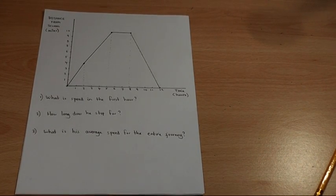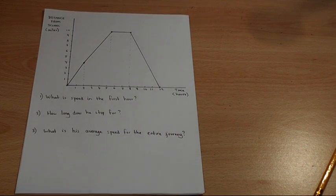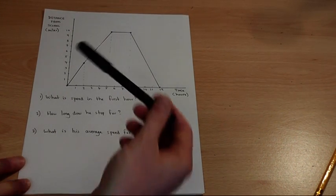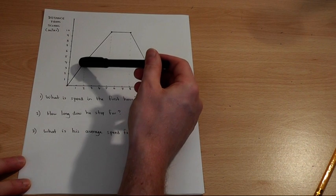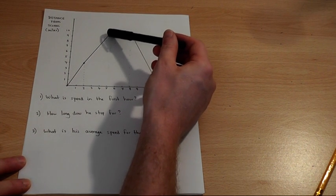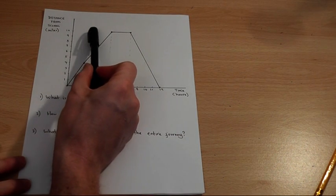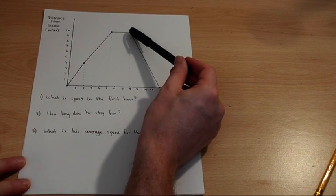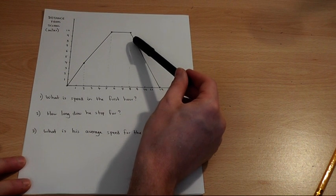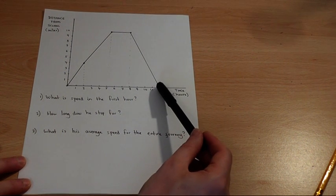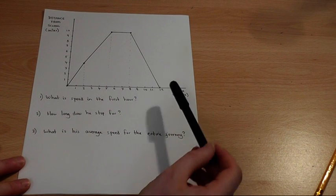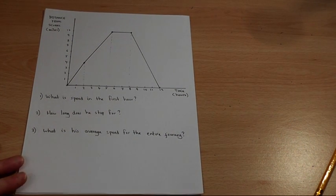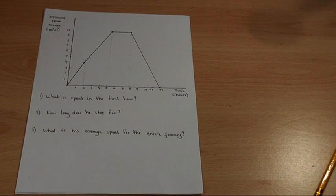This graph shows a distance time graph for someone from school who goes on a bike ride. They travel away from school and get to 10 miles away from school. This part of the journey here shows them returning to school until they're back to school here. There are three questions here which I want to answer about this graph.